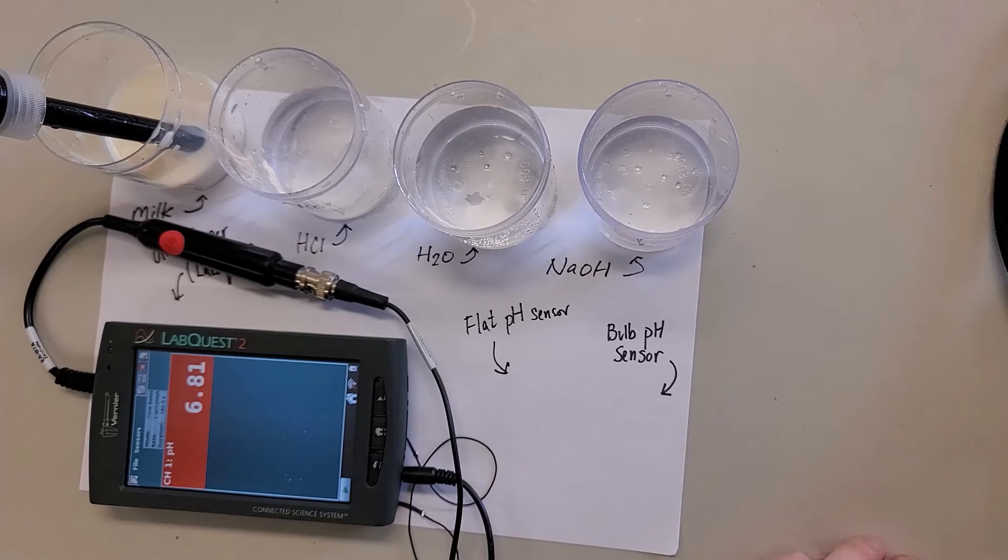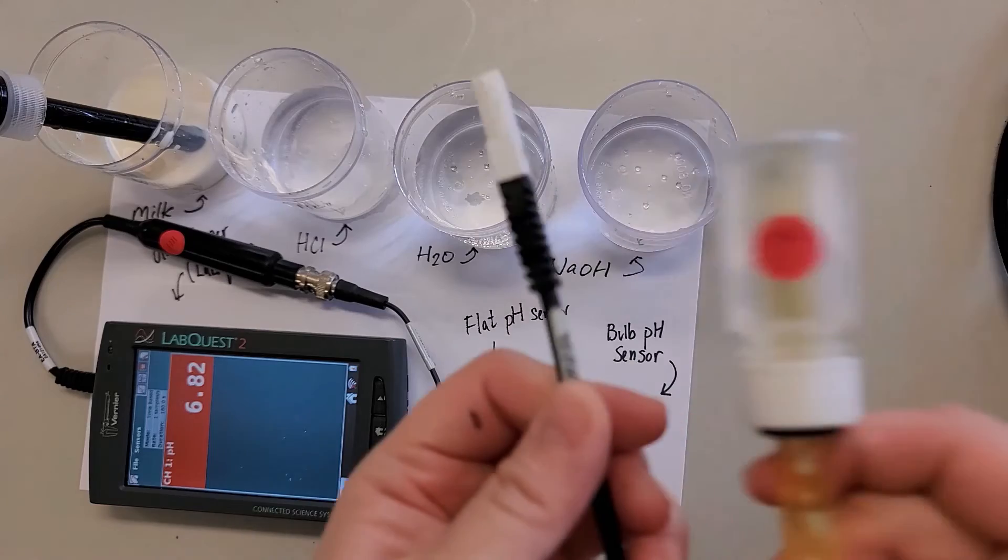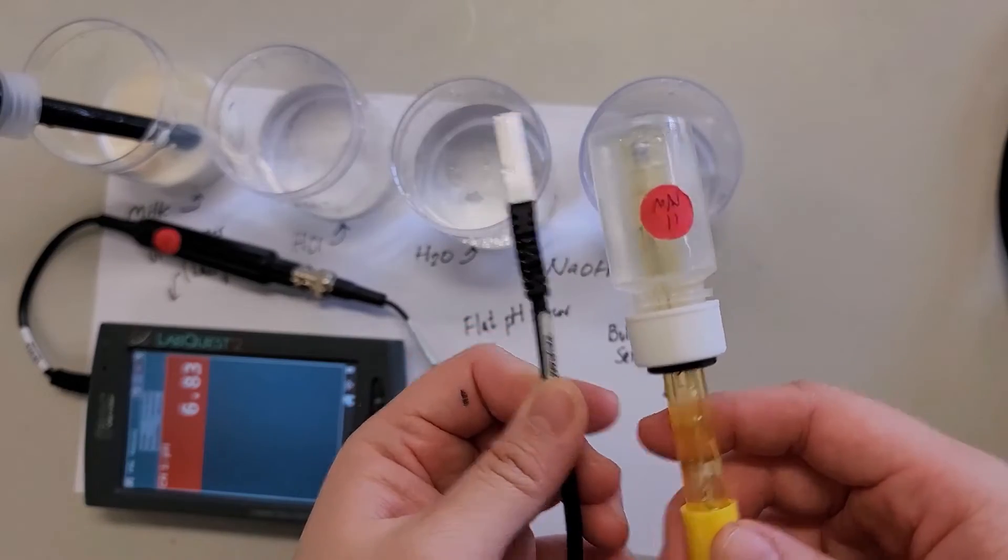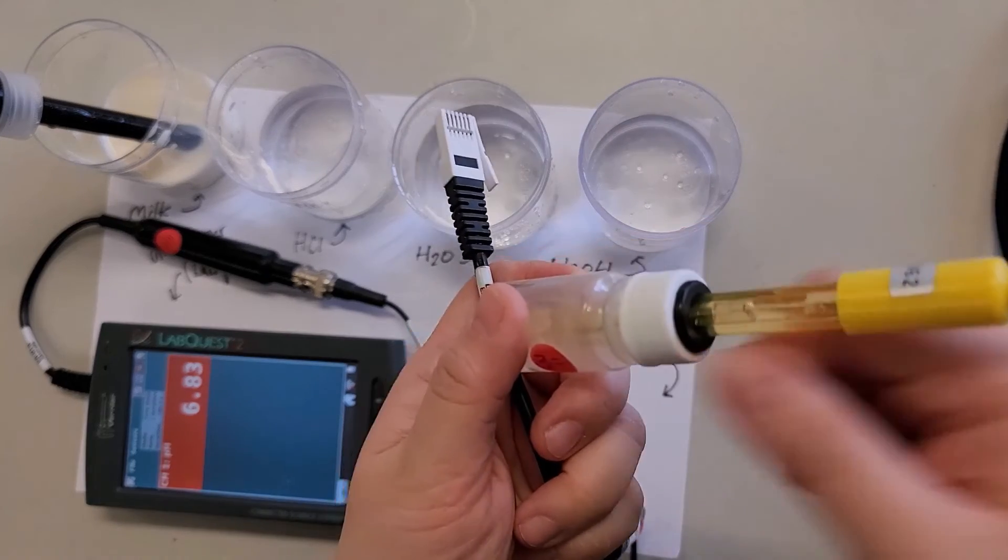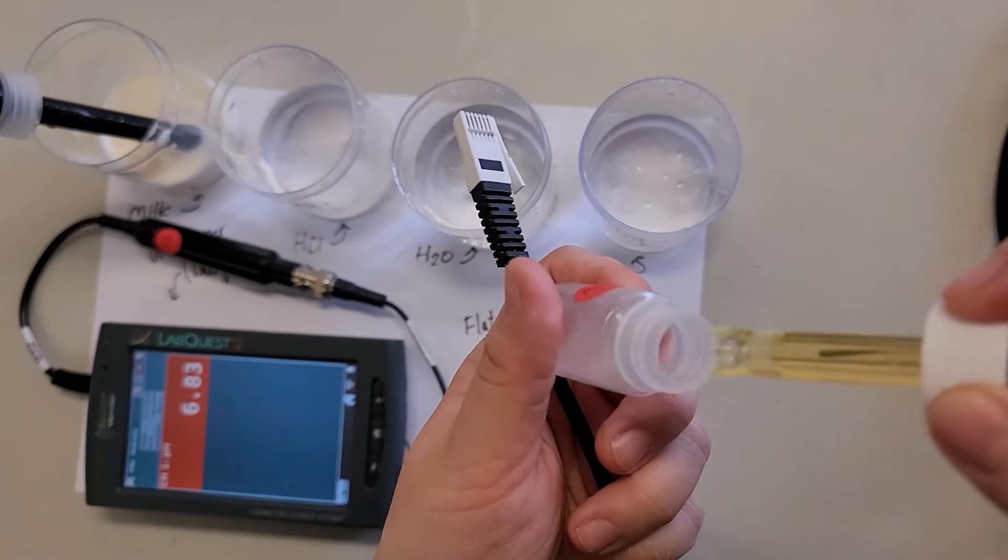Moving on is the bulb pH sensor. This one is the bulb pH sensor. When you take it out, just be careful. Screw it. Don't just plug it out. Just screw it and then take it out.